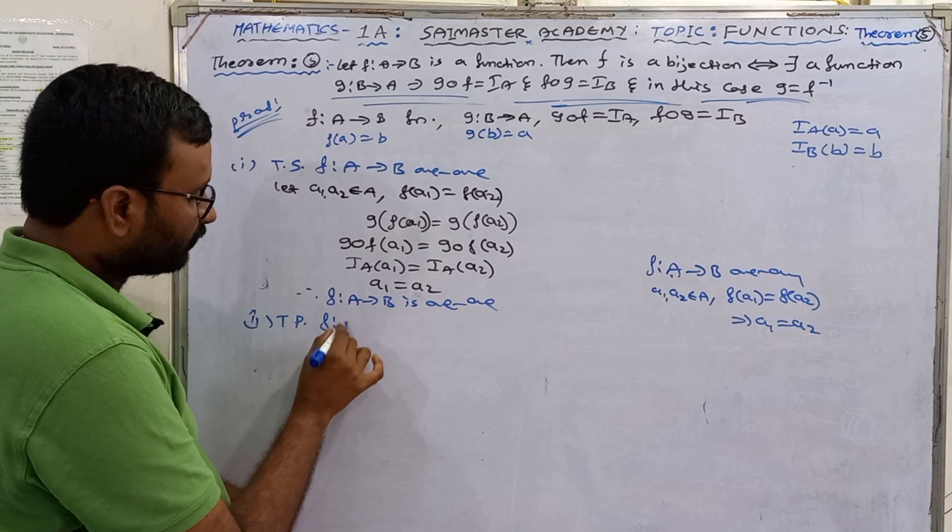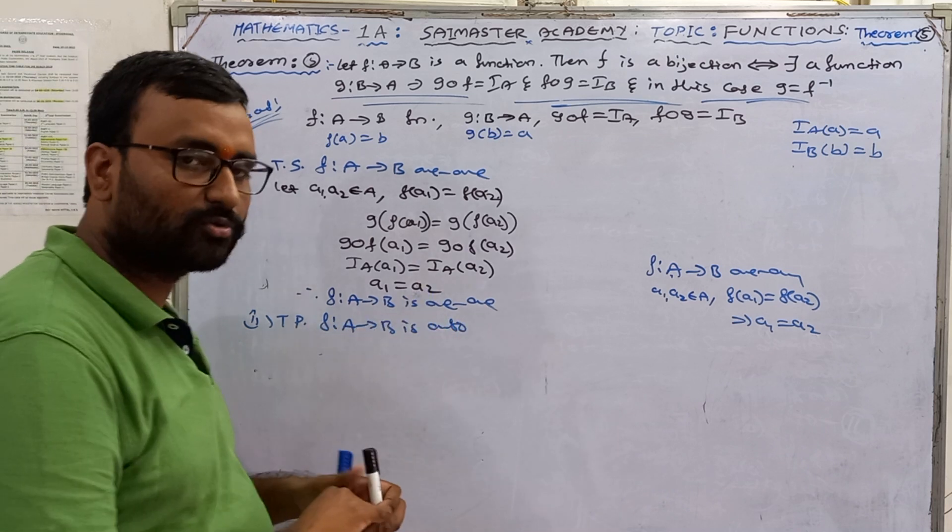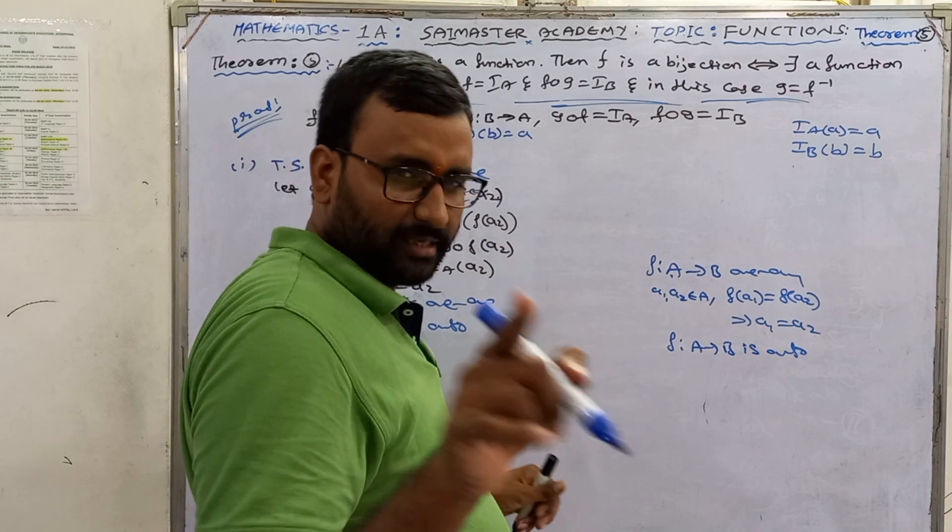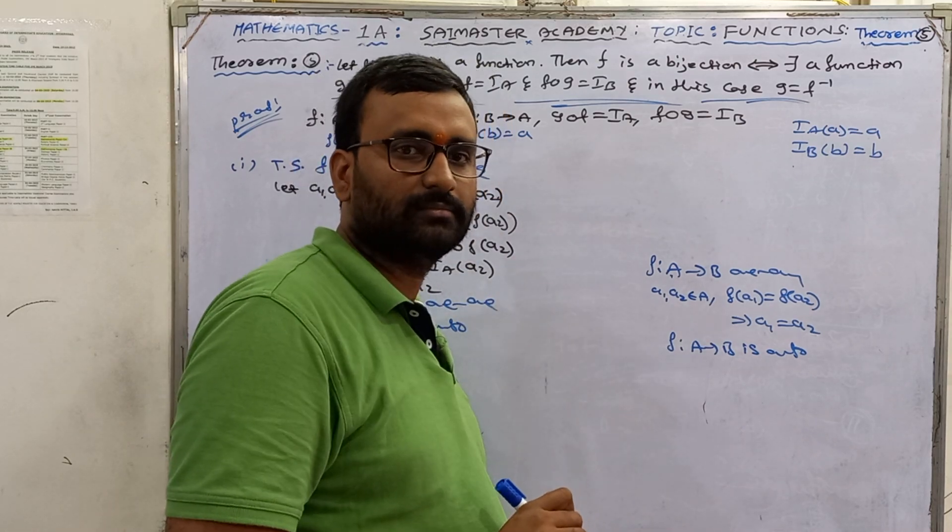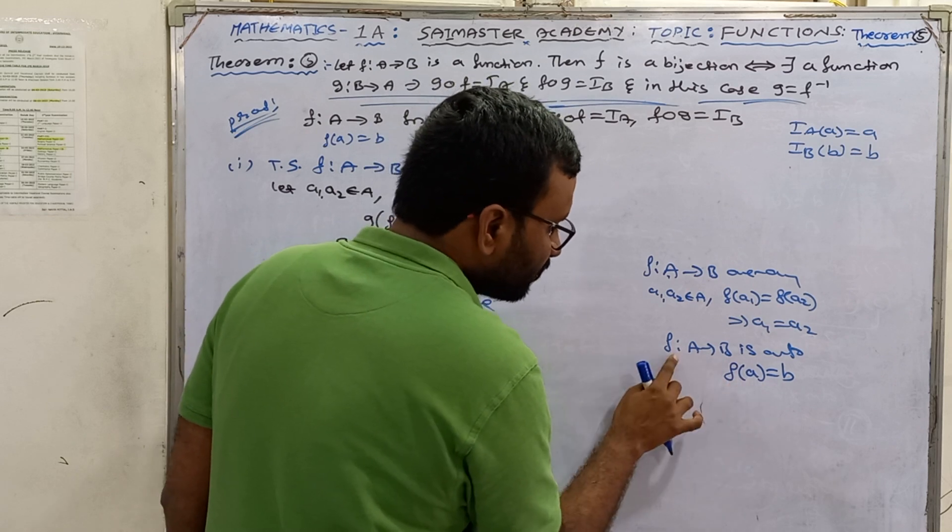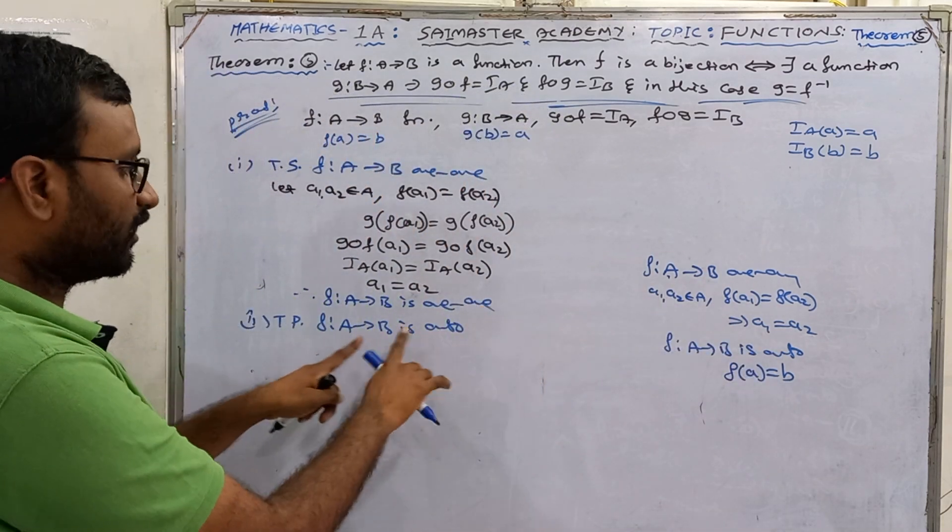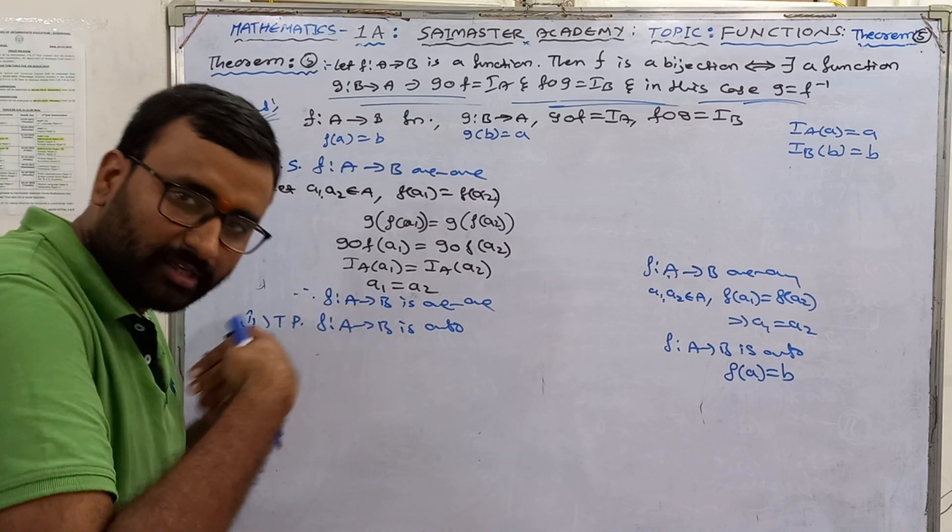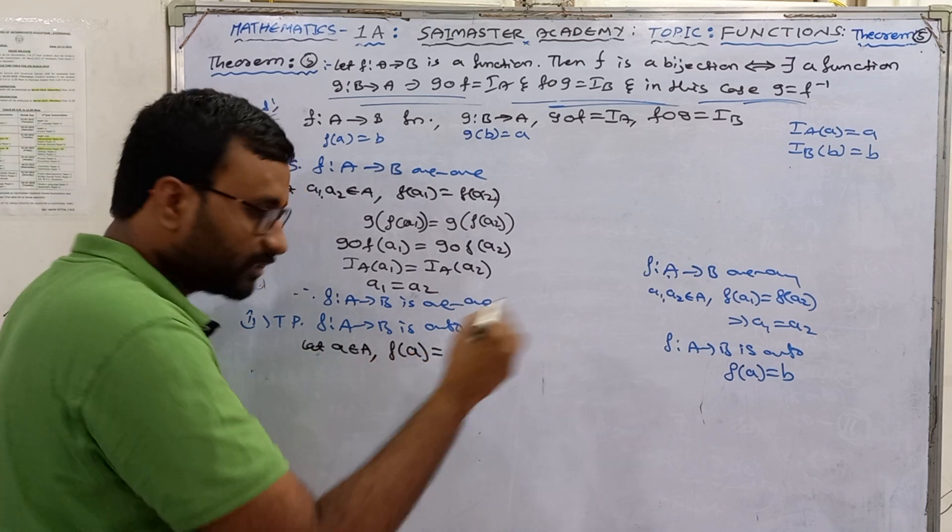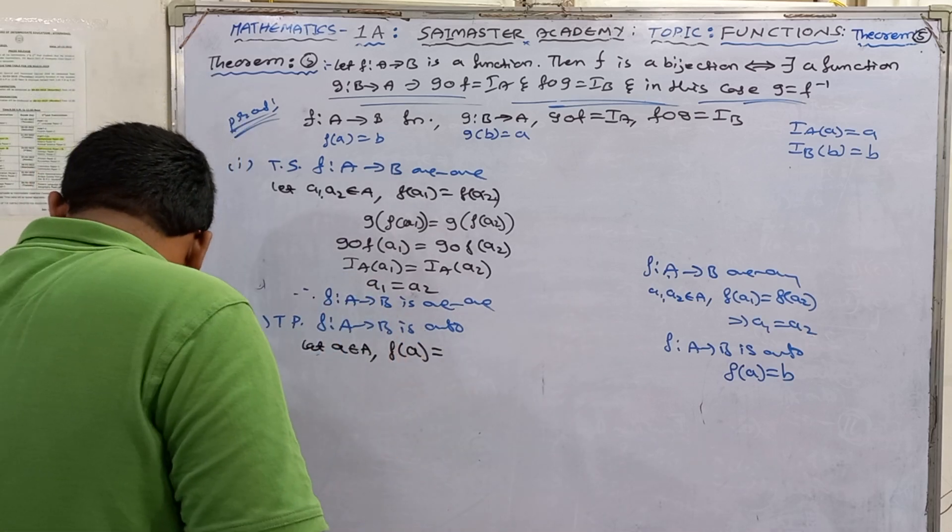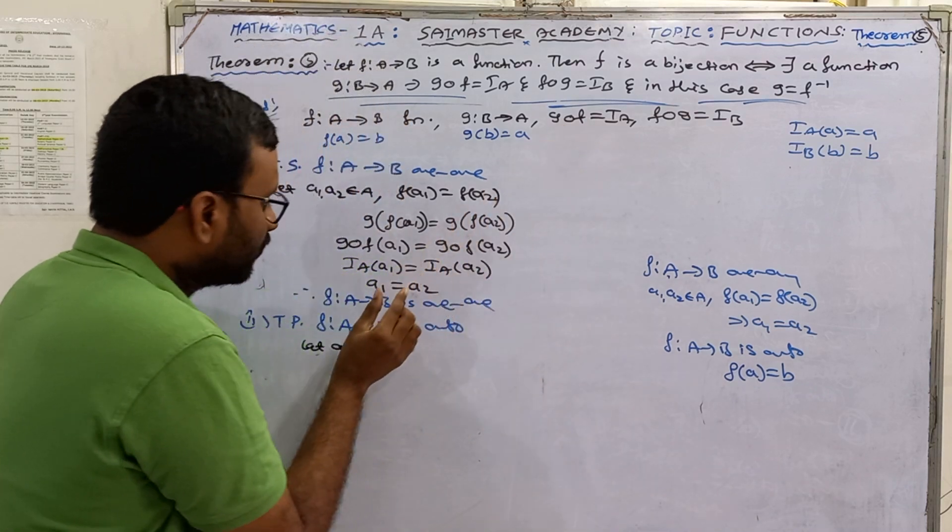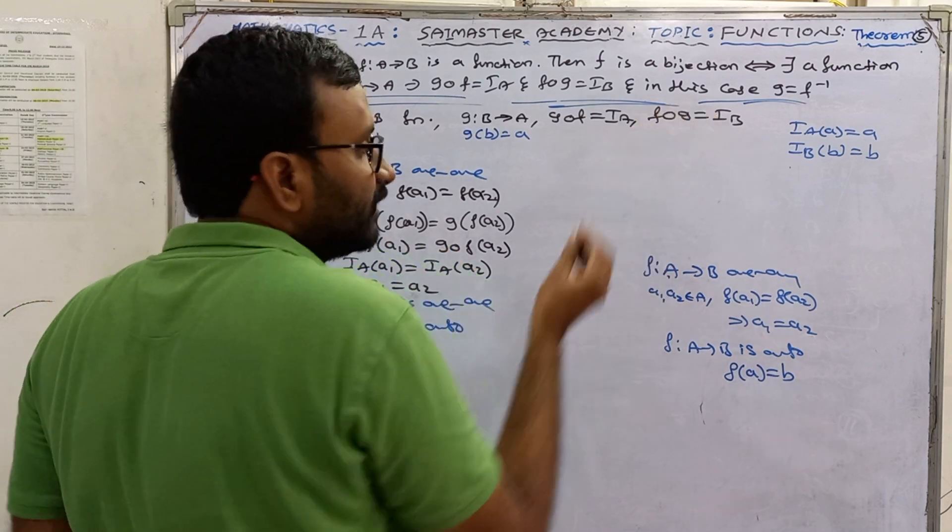Now we have to prove onto. To prove that F from A to B is onto. So onto means F of A equal to B. F from A to B is onto means F of domain element equal to codomain element. So for that also, let a belongs to A and take F of a and prove that b.